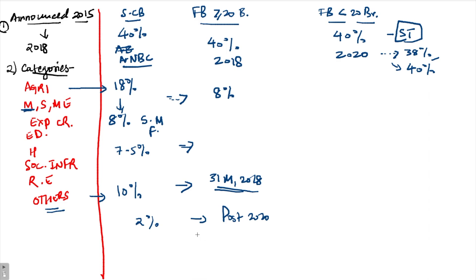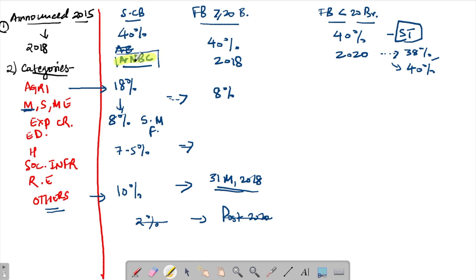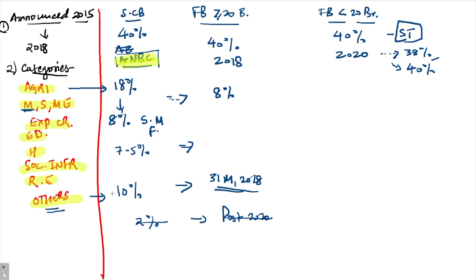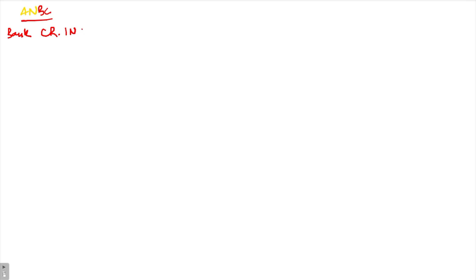Now let's come to the computation of adjusted net bank credit. The calculation is as follows: start with bank credit in India — the money lent by banks to institutions or individuals — then reduce bills rediscounted with RBI to arrive at net bank credit.